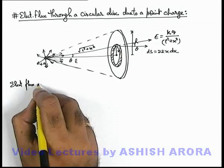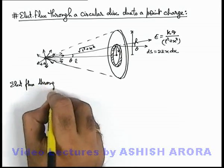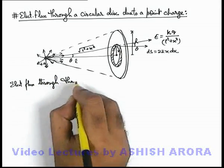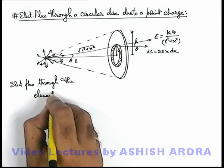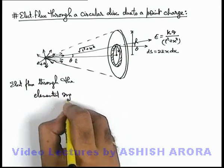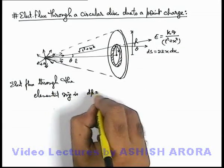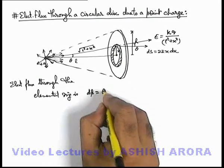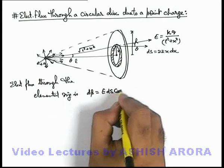Through the elemental ring, flux is E dot ds, or which can be written as E ds cos θ.